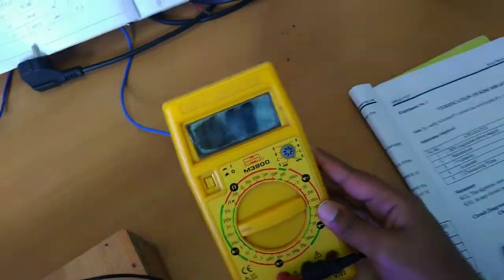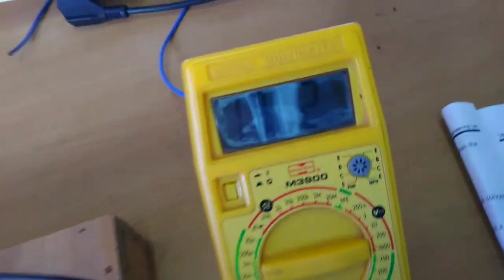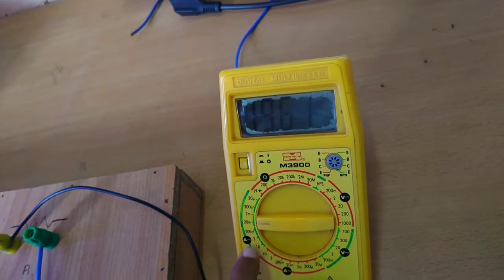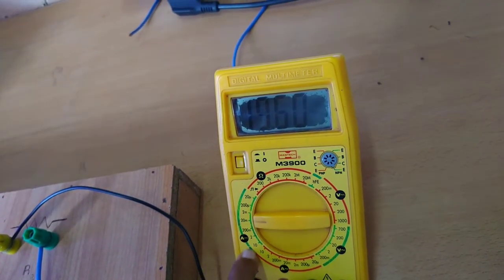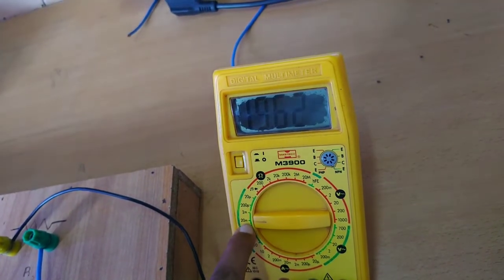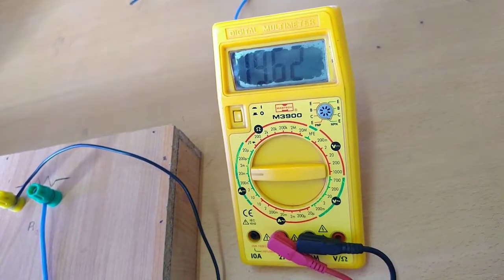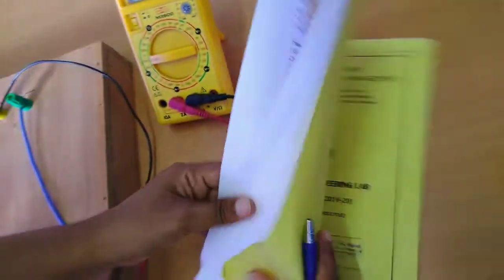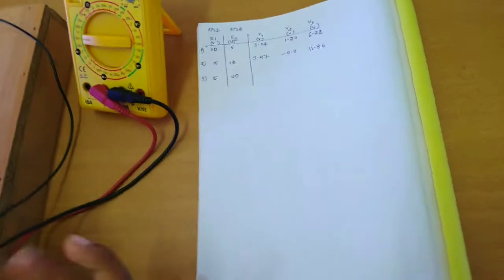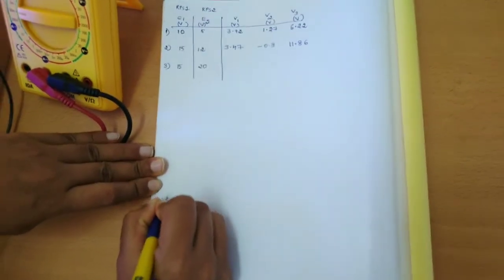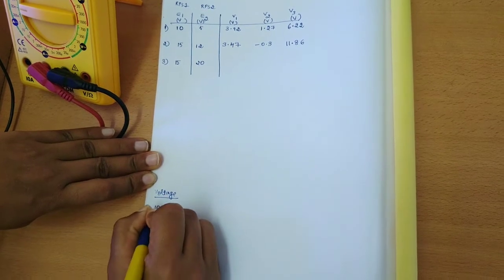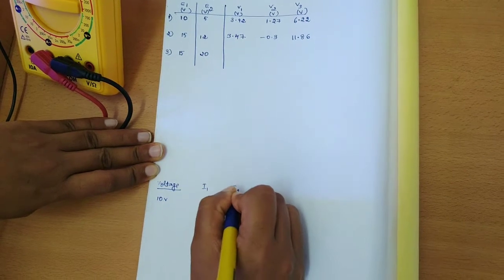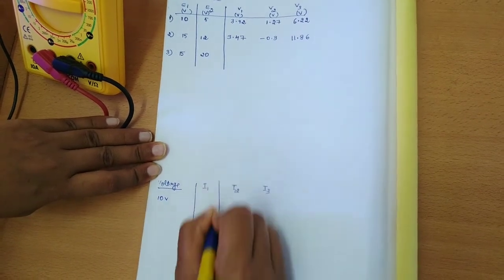For the first case at 10 volts, measuring A1: the multimeter is set to DC current mode in the milli range, and the current shown is 19.62 milliamps. So the voltage given is 10 volts, and we need to find currents I1, I2, and I3.